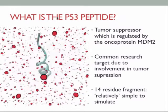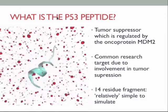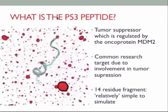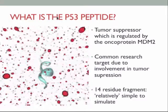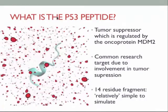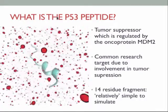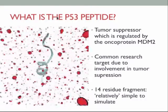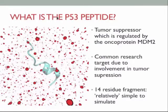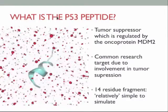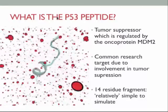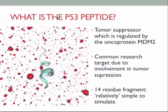What does w_init do? It initializes the system — it creates the west.h5 file and creates the initial states from the basis states. W_init will not create the basis structure; init.sh does that.